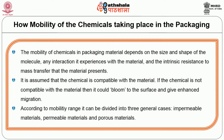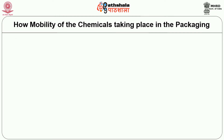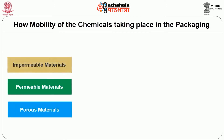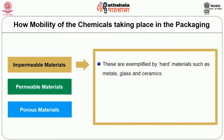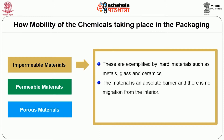According to the mobility range, it can be divided into three general cases: impermeable materials, permeable materials and porous materials. The first one is impermeable materials. These are exemplified by hard materials such as metals, glass and ceramics. The material is an absolute barrier and there is no migration from the interior. Migration is confined to a surface phenomenon only.